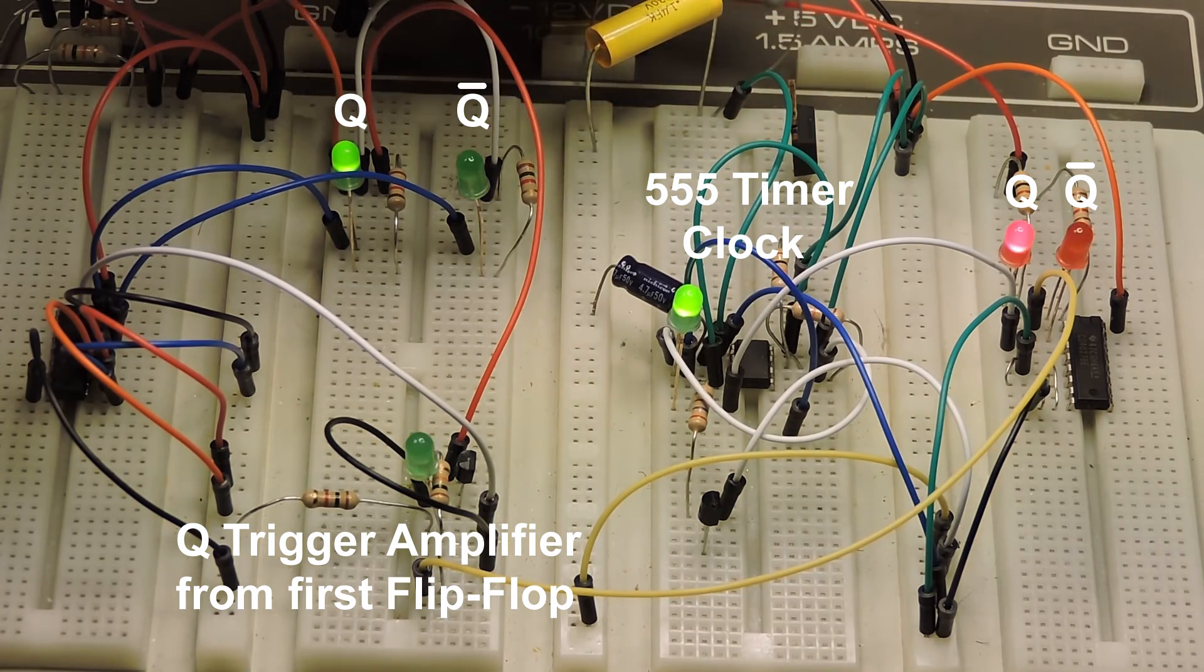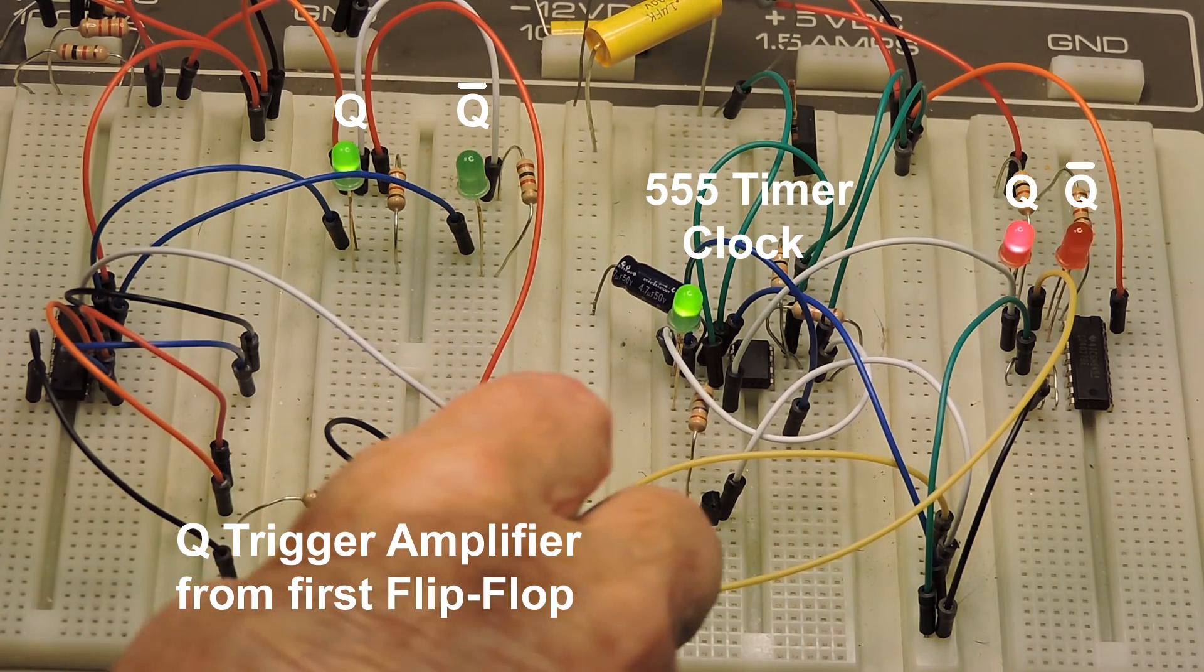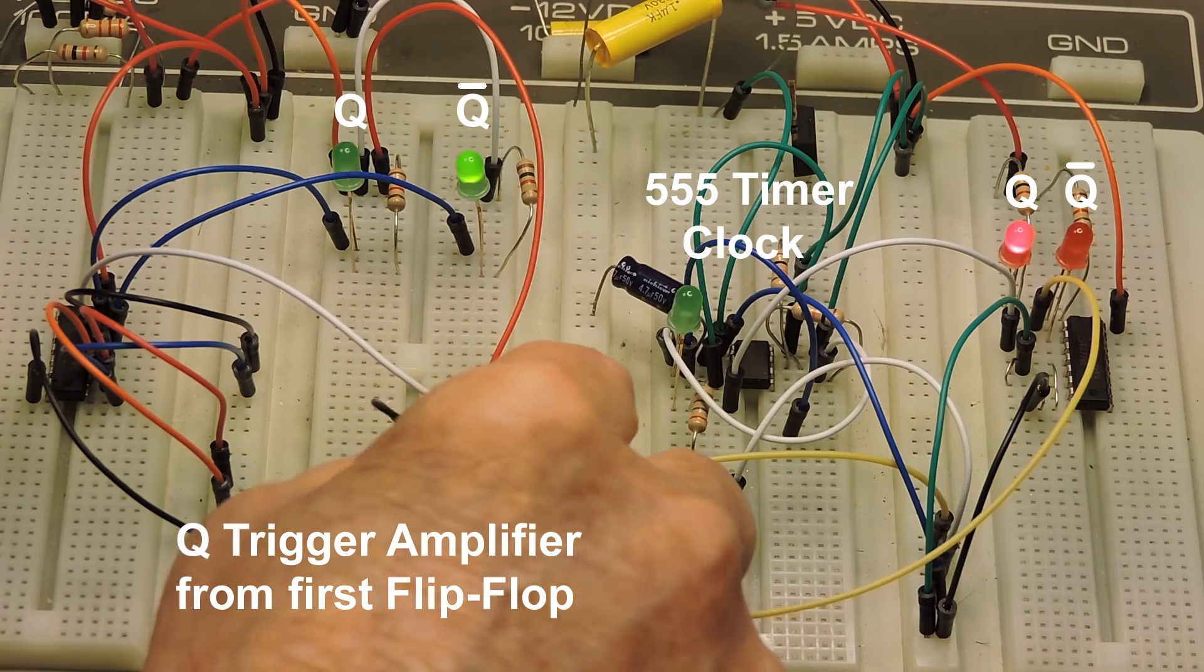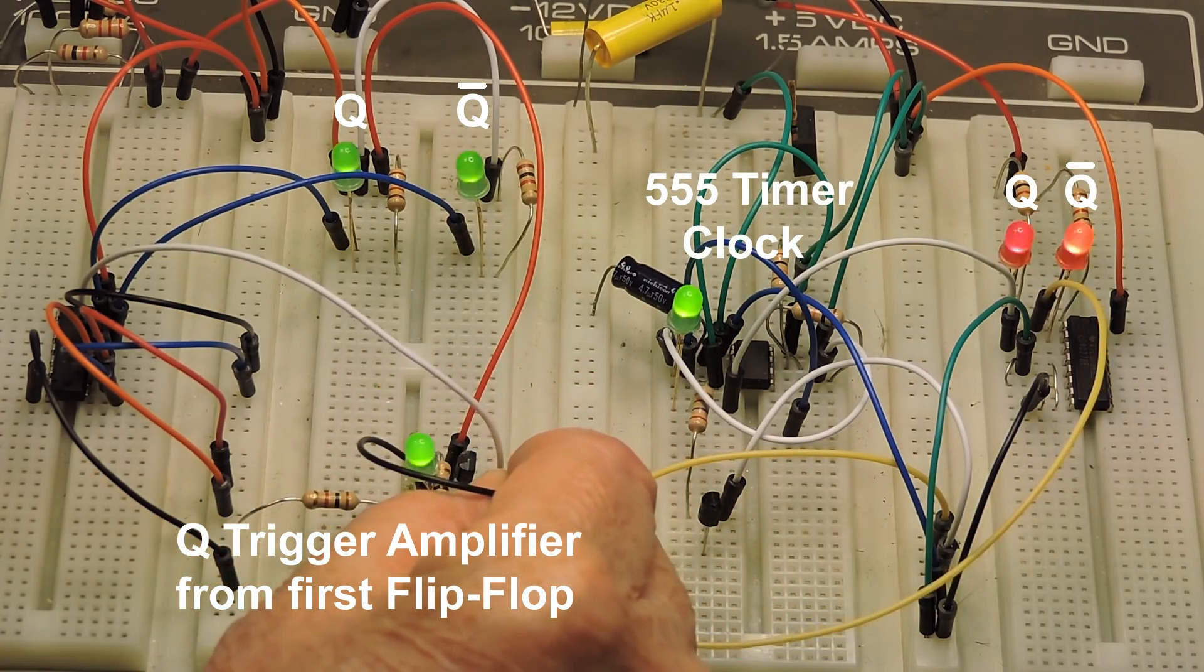Now I'm going to short out the diode on the little transistor circuit just to show you that you don't really need that. And notice all the other lights nothing happens. It keeps right on working.